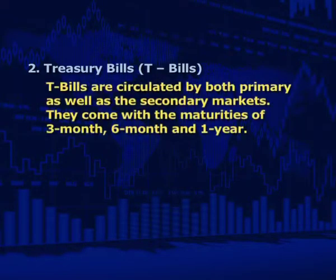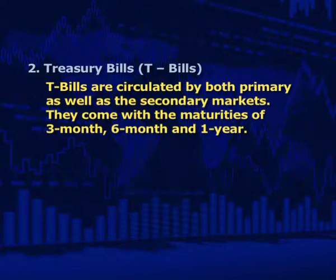Second is treasury bills or T-bills. Treasury bills are one of the safest money market instruments as the central government issues them — they are zero-risk instruments and hence returns are not that attractive. T-bills are circulated in both primary and secondary markets. They come with maturities of three months, six months, and one year. The central government issues T-bills at a price less than their face value, and the difference between the buy price and the maturity value is the interest earned by the buyer.